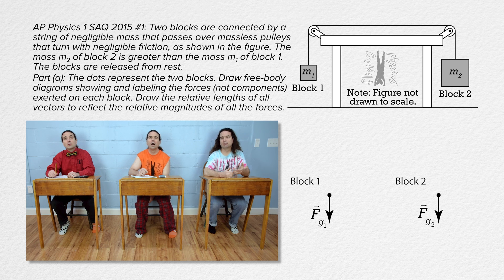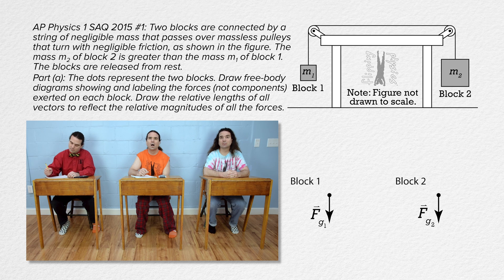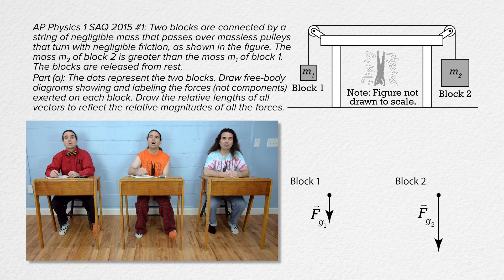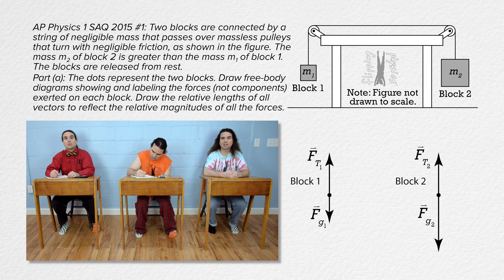And make the arrow for force of gravity 2 longer in length than the arrow for force of gravity 1 because mass 2 is greater than mass 1. And each mass has an upward force of tension acting on it because both are being pulled upwards by a string. You can call them force of tension 1 and force of tension 2.